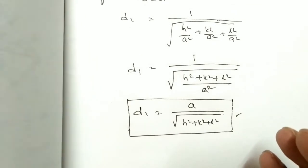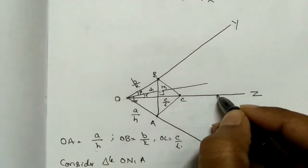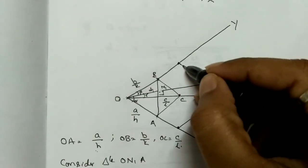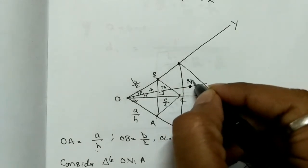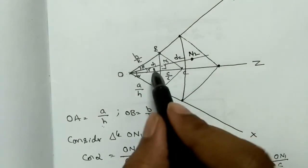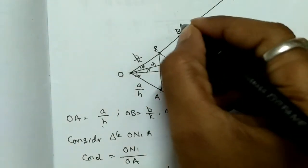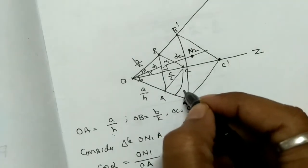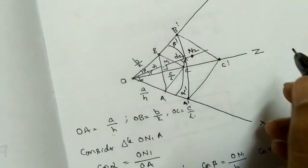This equation represents the distance explained by Miller — we use Miller indices to index the different planes. Now we need to find the distance to another plane. Assume one more plane at a distance N2 from the origin, so the distance from the origin to the second plane is d2. The intercepts for this second plane are OA' = 2a/h, OB' = 2b/k, and OC' = 2c/l.